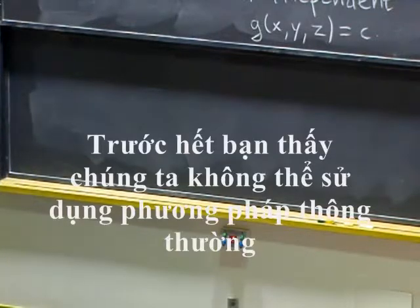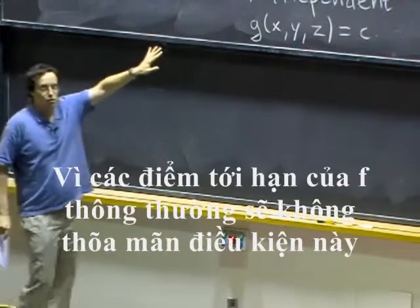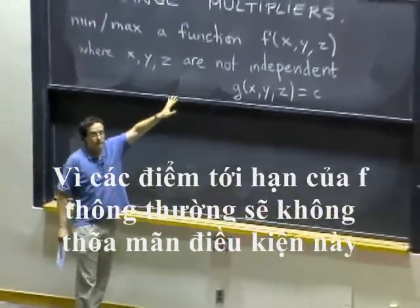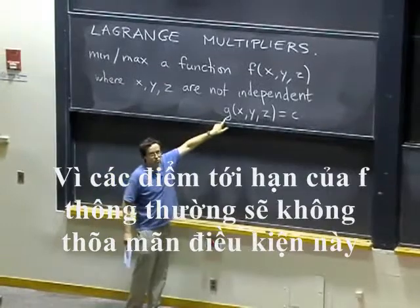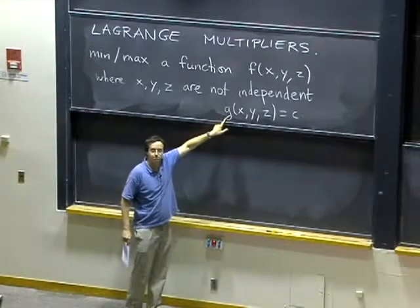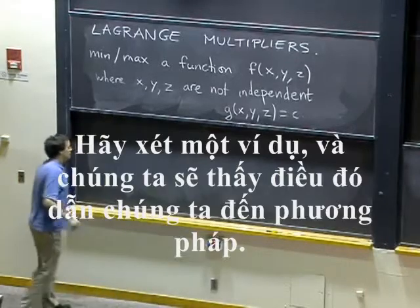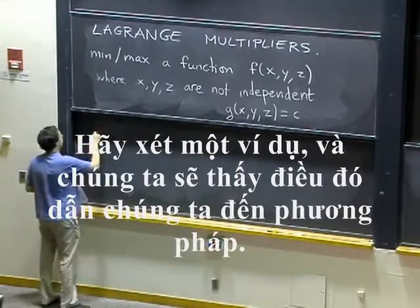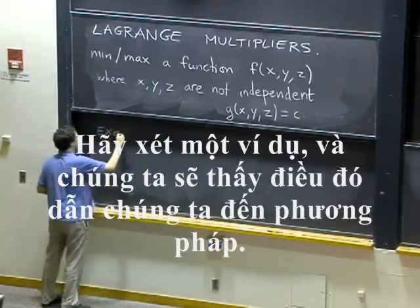We'll look mostly at mathematical examples, but just to point out that this is useful when you study gases in physics. The first observation is we can't use our usual method of looking for critical points of f, because critical points of f typically will not satisfy this condition, so they won't be good solutions. We need something else. Let's look at an example and we'll see how that leads us to the method.